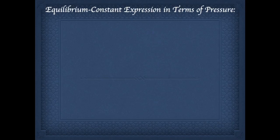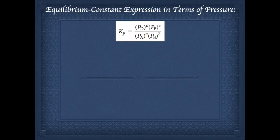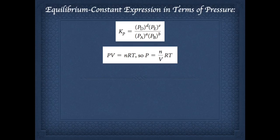Up until now we've discussed the equilibrium constant expression in terms of concentration. We can also write it in terms of pressure when dealing with gases — that gives us Kp, the equilibrium constant using partial pressures rather than concentrations. To relate Kc to Kp, recall the ideal gas law rearranged: dividing both sides by volume gives pressure equals (n/V) times RT. Recognizing that n/V equals concentration, the partial pressure of A equals the concentration of A times R times T.